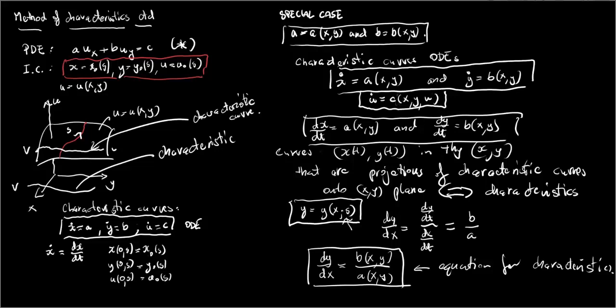Because a given characteristic, like this one, is a projection of a characteristic curve from here and it corresponds to a certain value of the parameter S that tells us at which point our characteristic curve intersects the initial condition.